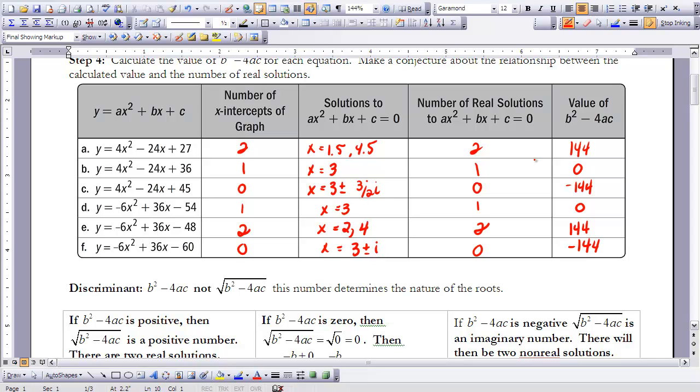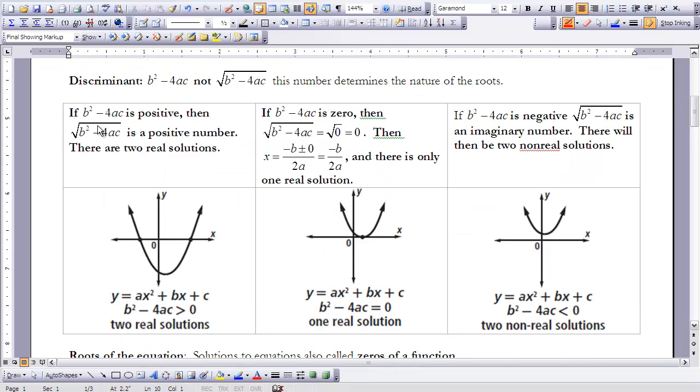The discriminant can be used to determine what kind of solution your equation will have. Will you have complex solutions? Will you have real solutions? Will you have one solution, two solutions? How many solutions will you have? The discriminant can help you with that. So when we use the quadratic formula, we have this value underneath the radical, which is b squared minus 4ac. So what happens underneath this radical determines what my solution is going to end up as.